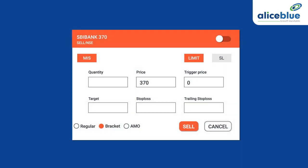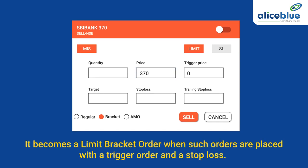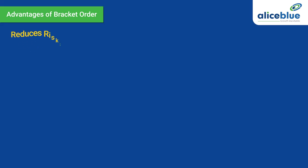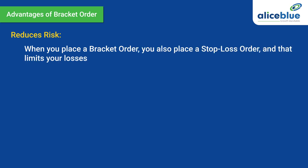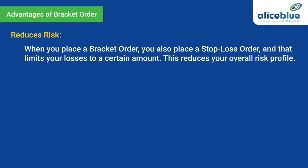For example, like we talked about the SBI Sell Bracket Order, if you have chosen a limit order of Rs. 370, the order would get placed only when the price reaches Rs. 370 or more. It becomes a limit bracket order when such orders are placed with a trigger order and a stop loss. Now, let's talk about the advantages of bracket order. Placing a bracket order has three important advantages. First is that it reduces risk. When you place a bracket order, you also place a stop loss order and that limits your losses to a certain amount. This reduces your overall risk profile.